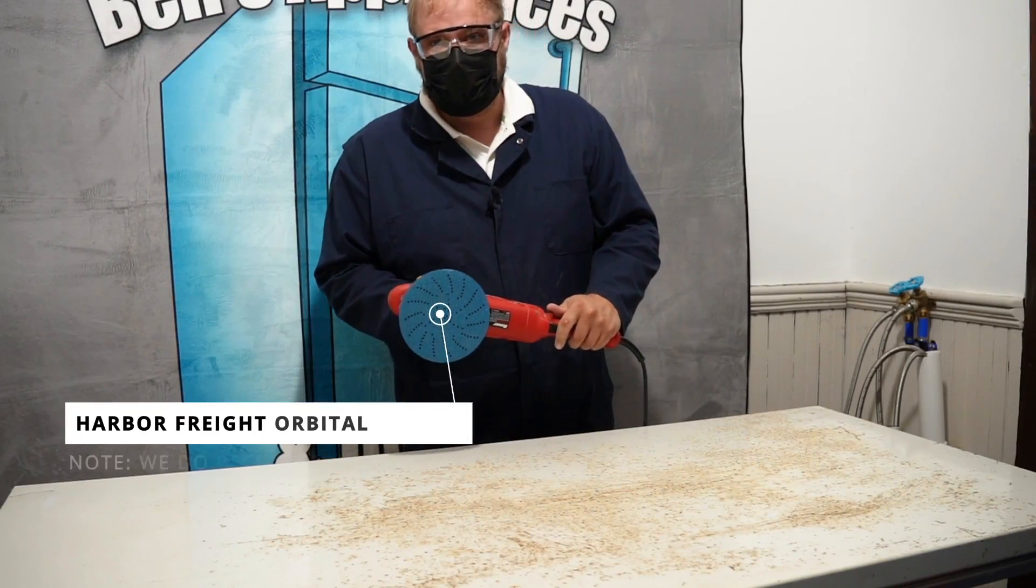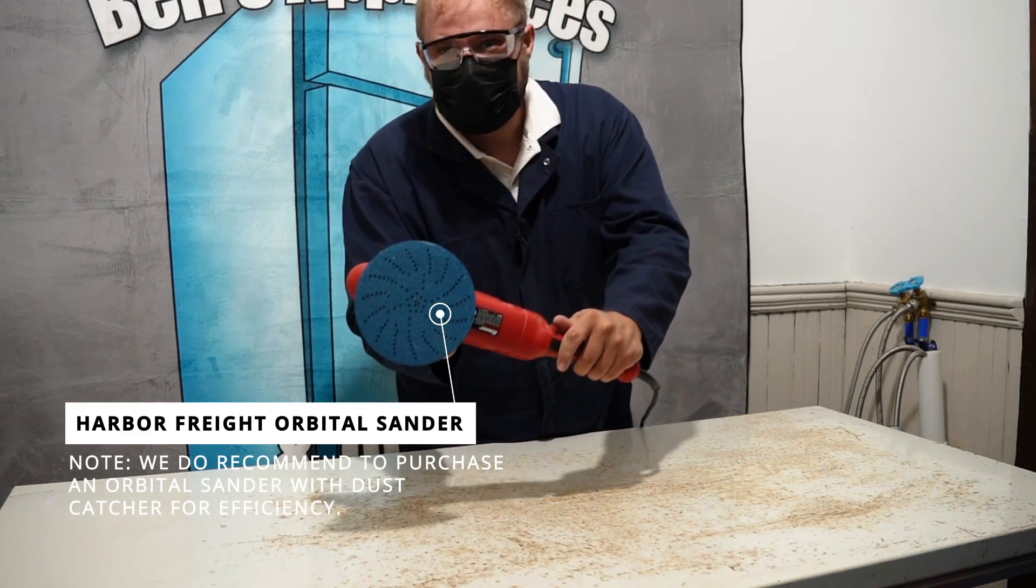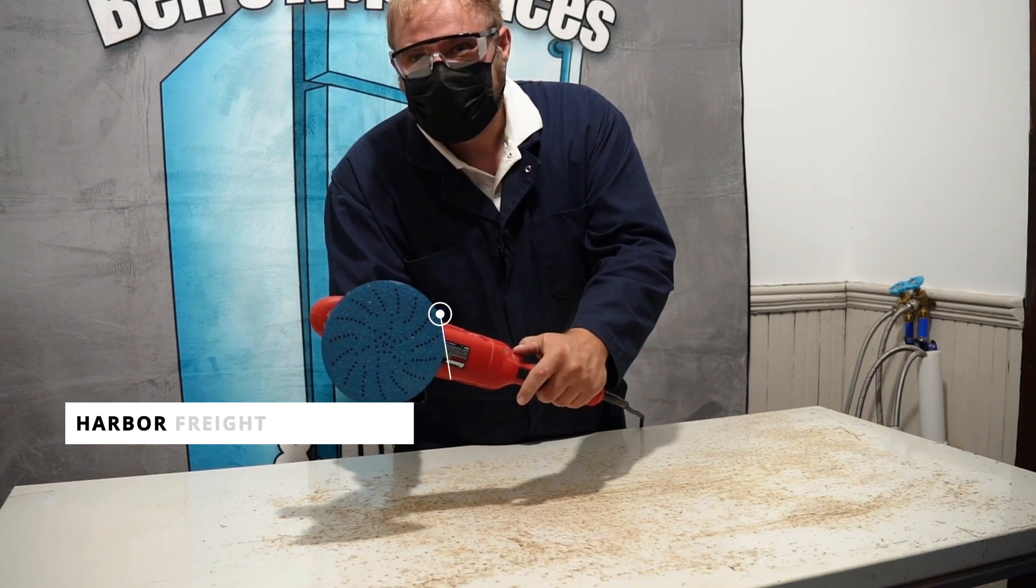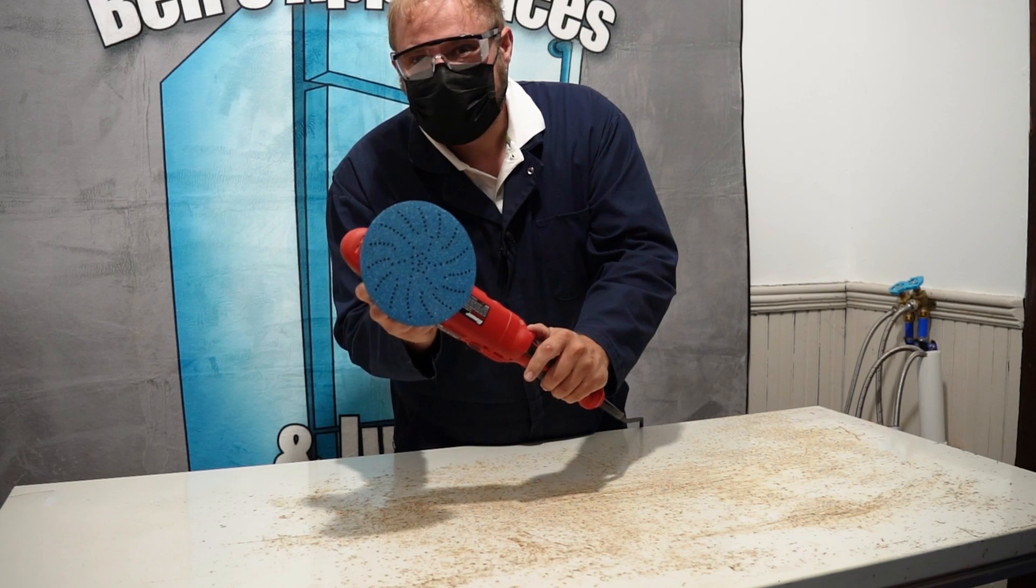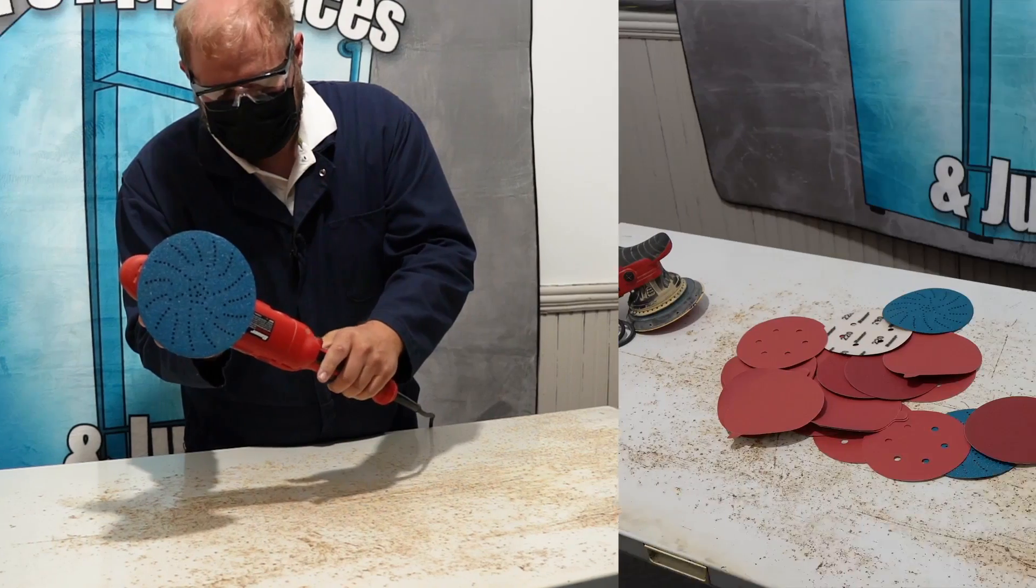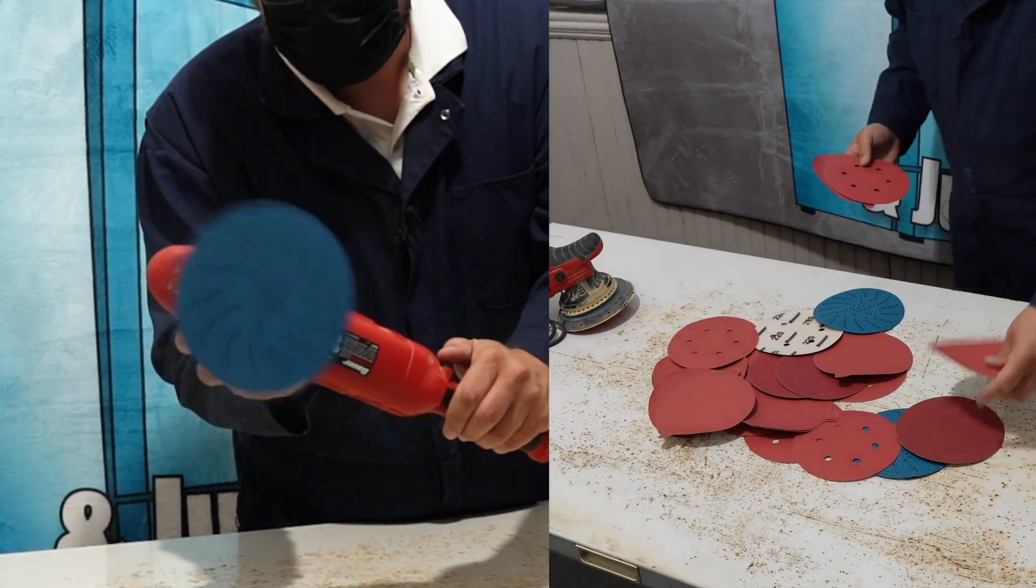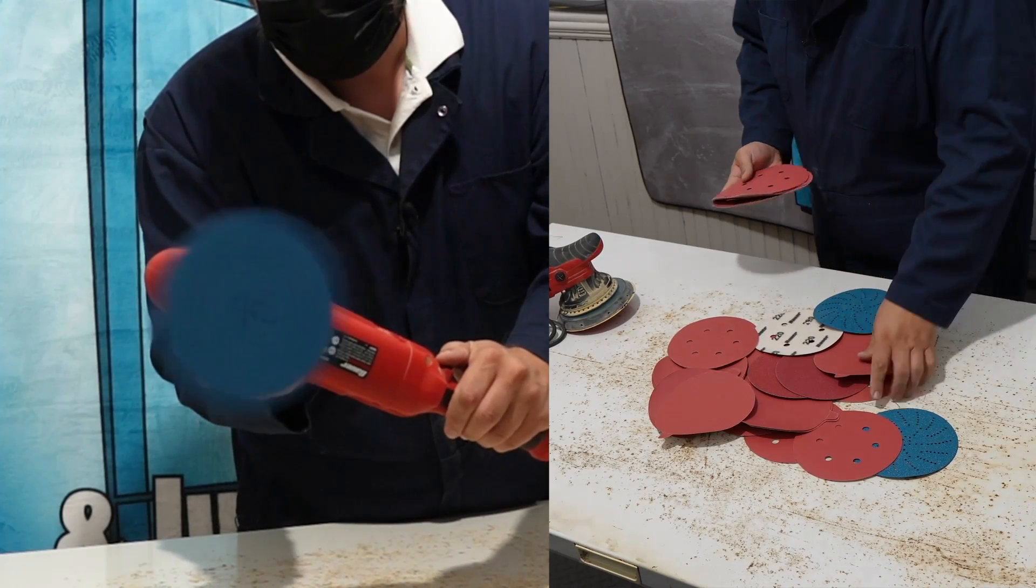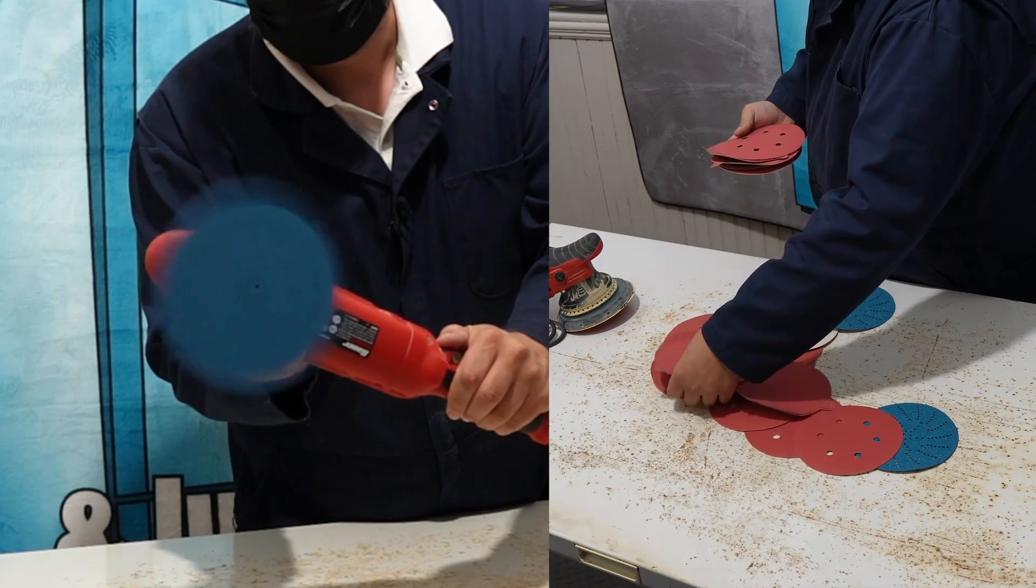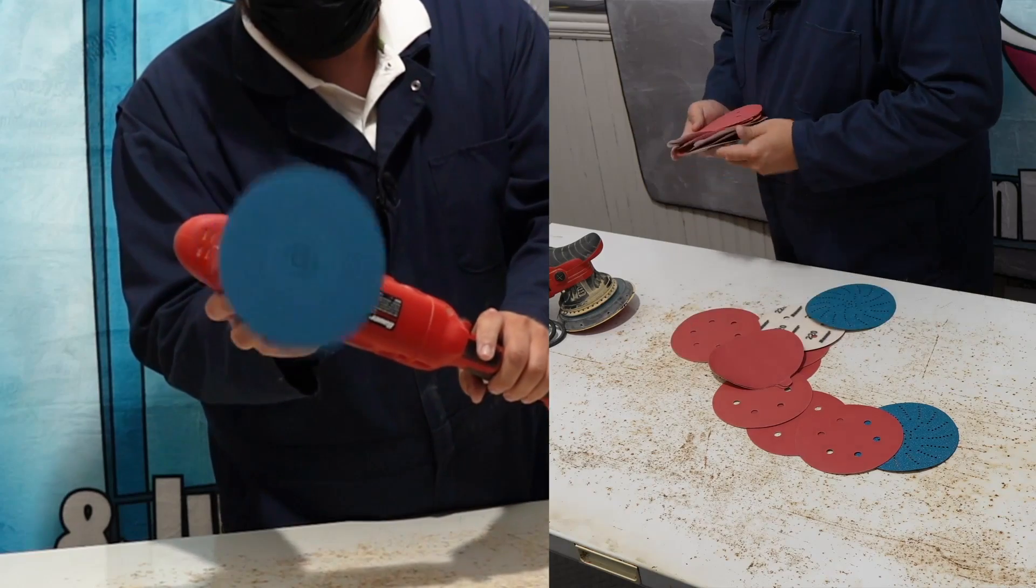Next I'm going to use a Harbor Freight orbital sander with Bauer sanding pads. I used this one to actually sand some of my hardwood floors and it works great. However the lack of a dust catch is a problem and I would suggest if you're going to buy one, get one with a dust catcher. Either way I suggest an orbital sander. When it operates it uses a varied random pattern making the sanding more even than if done by hand.